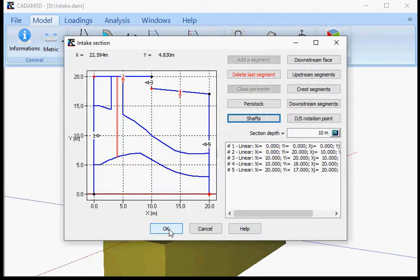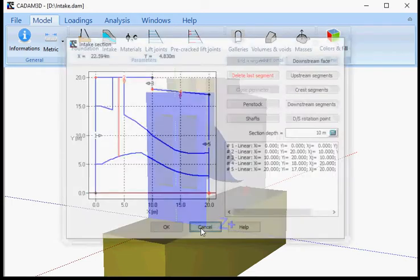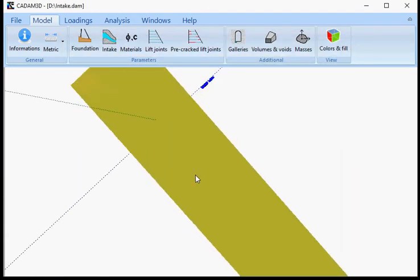And that's it. You have here how to define an intake section in CADAM 3D. Thank you.